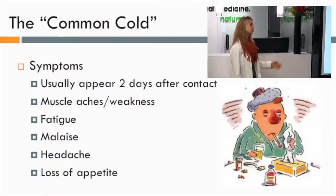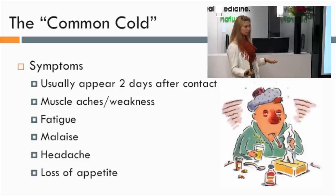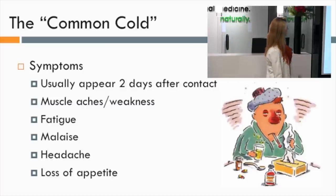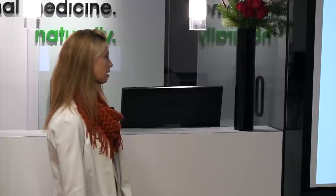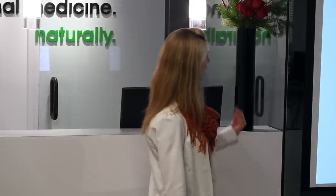Symptoms usually appear two days after you've had contact with somebody — that's why a lot of people say they don't know where they got it. Muscle aches, weakness, fatigue, malaise, headache, and loss of appetite are other symptoms that go along with this. Headaches tend to come from toxins within the viruses trying to break down — our liver is not working optimally. That goes back to hydration: if we stay hydrated, a lot of times we can prevent viruses from attaching because the body can flush them out before they actually attach.